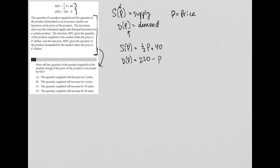The function S of P gives the quantity of the product supplied to the market when the price is P dollars, and the function D of P gives the quantity demanded by the market when the price is P dollars. I feel confident I was able to extract the important information.